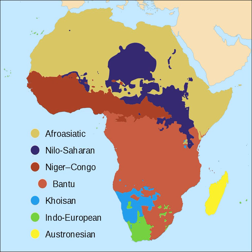The Niger-Kordofanian language family, joining Niger-Congo with the Kordofanian languages of South Central Sudan, was proposed in the 1950s by Joseph Greenberg. Today, linguists often use Niger-Congo to refer to this entire family, including Kordofanian as a subfamily. One reason is that it is not clear whether Kordofanian was the first branch to diverge from the rest of Niger-Congo. Mande has been claimed to be equally or more divergent. Niger-Congo is generally accepted by linguists, though a few question the inclusion of Mande and Dogon, and there is no conclusive evidence for the inclusion of Ubangian.